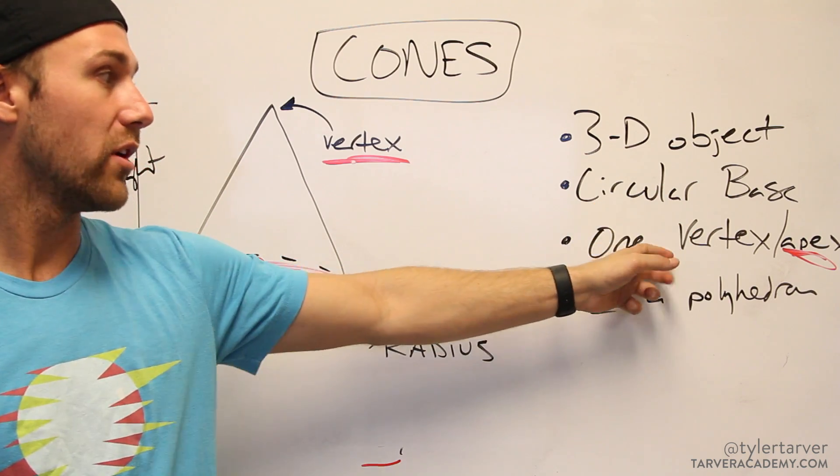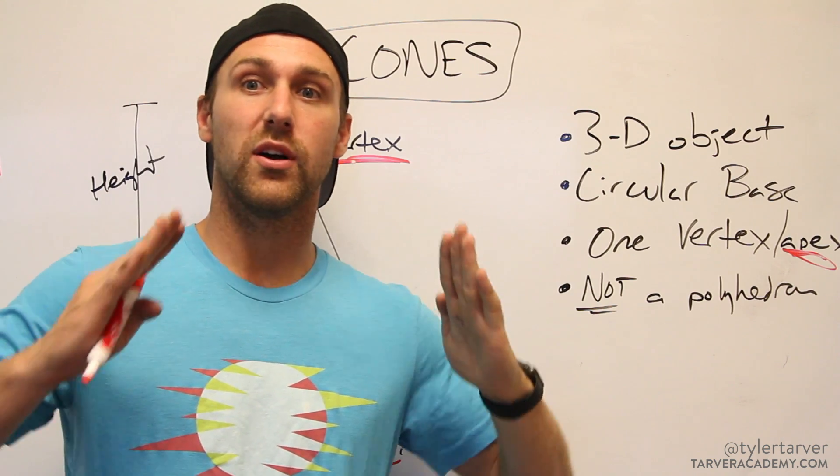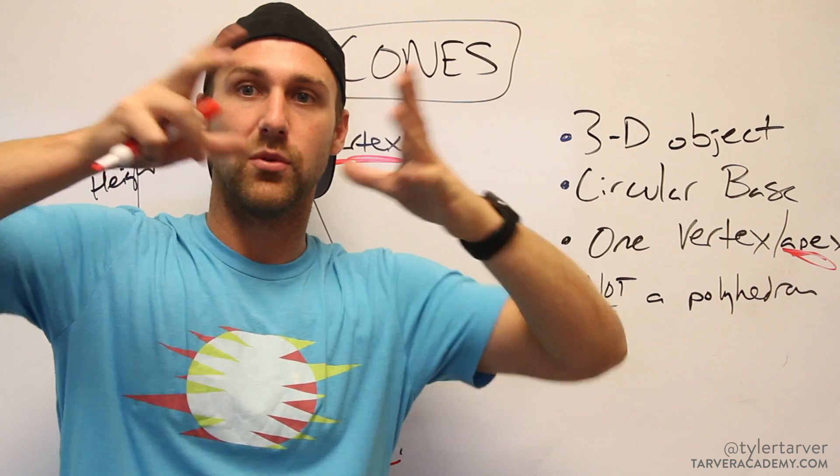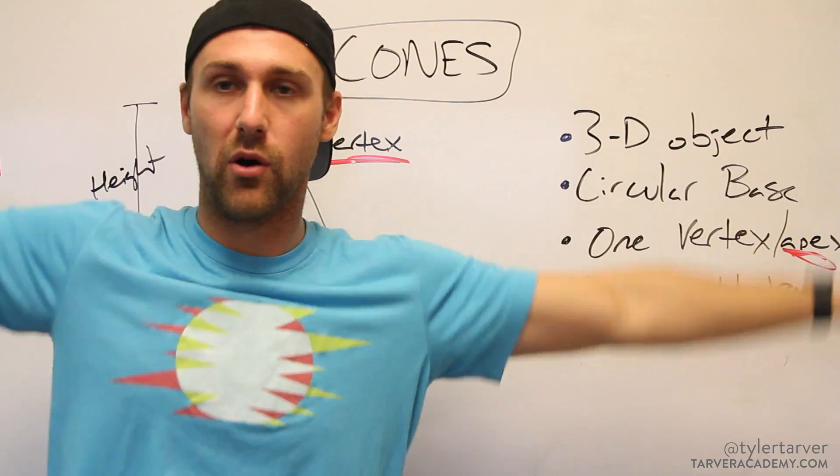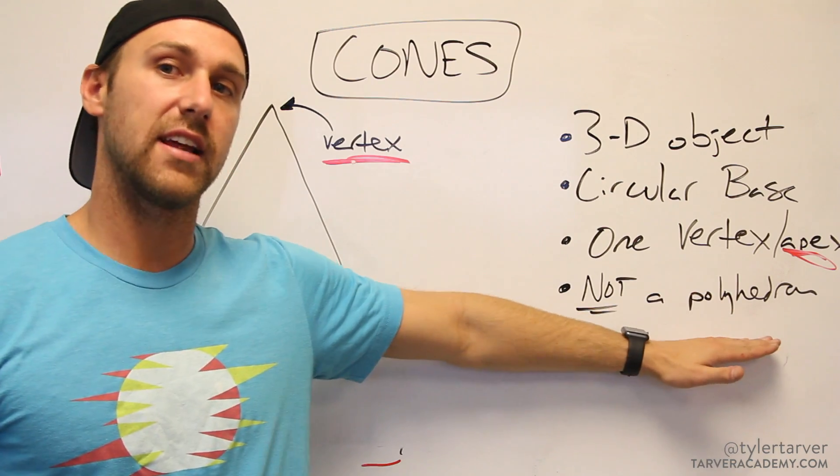Has a circular base, we already discussed that. One vertex, apex, it comes to one point as opposed to like a pyramid which has flat sides and comes up to a point. This is like a cylinder that was tightened up and then broke off the top.